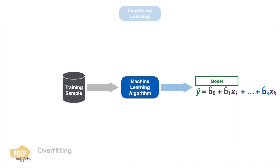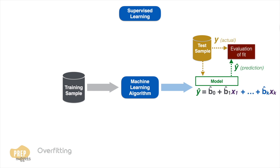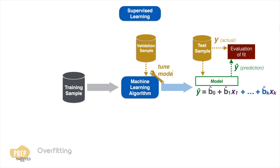We've learnt in the last lesson that under supervised learning, a set of training samples is used to train a machine learning model, and a separate test sample is used to evaluate the model's ability to predict well on new data. In some cases, data scientists add a separate validation sample to validate and tune the model before final testing. The training sample is often referred to as being in-sample, while the validation and test samples are commonly referred to as being out-of-sample.